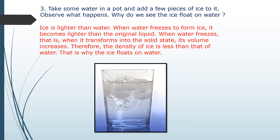Take some water in a pot and add a few pieces of ice to it. Observe what happens. Why does ice float on water? Ice is lighter than water. When water freezes to form ice, it becomes lighter than the original liquid. When water transforms into the solid state, its volume increases. Therefore, the density of ice is less than that of water, and that is why ice floats on water.